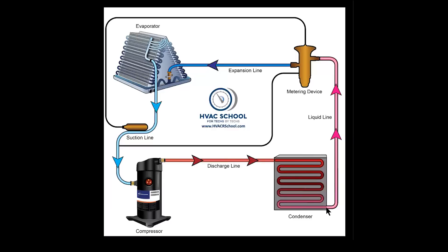It all depends on where you're measuring pressure — typically here at the outlet of the condenser at the liquid line service port on a residential system. So why does a liquid line restriction cause low head? When you have a restriction, not as much refrigerant can come through the evaporator and back. Refrigerant density decreases, there's less for the compressor to pump, and less heat is being added to the system. Think of the evaporator as a heat absorber and the condenser as a heat rejector. If you don't have as much refrigerant going into your heat absorber, you're not absorbing as much heat, not bringing as much heat back to the compressor, and therefore not as much heat going into the condenser — so there's less heat to reject and you don't have high head pressure.